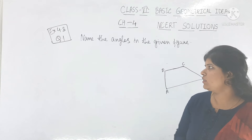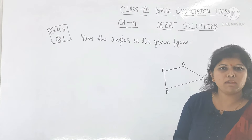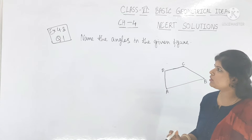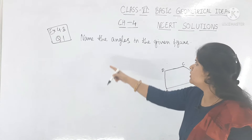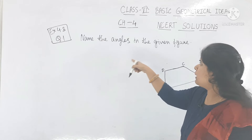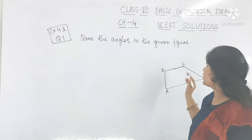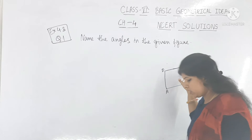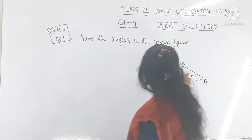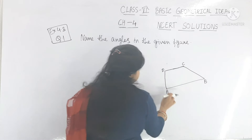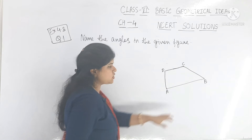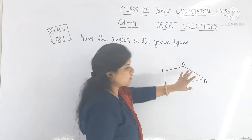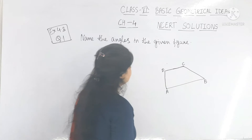Here is question number 1. What is question number 1? You have to name the angles of the given figure. You can see that it has 4 sides — that is a quadrilateral.